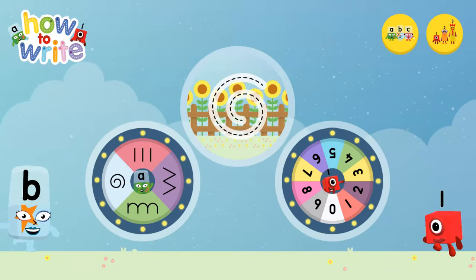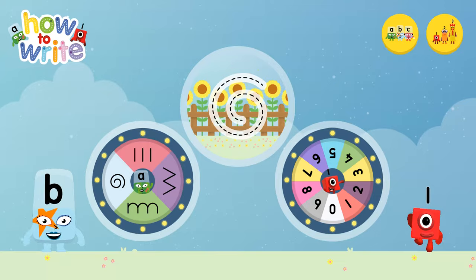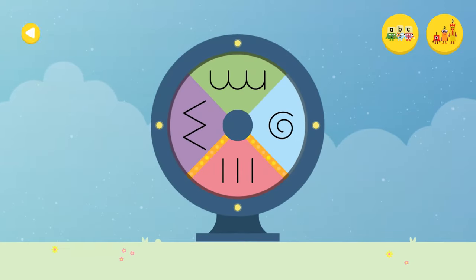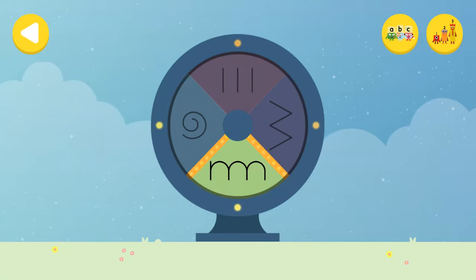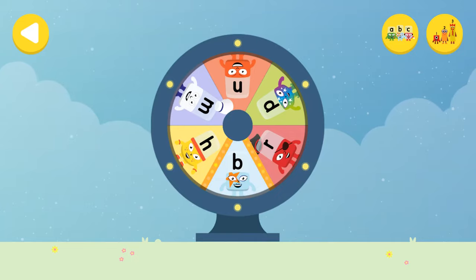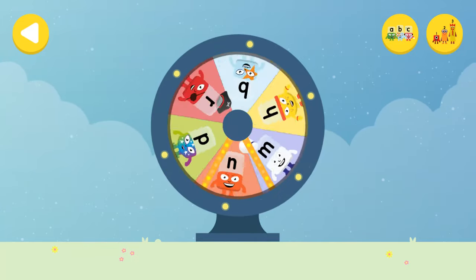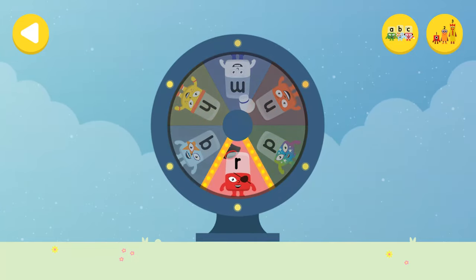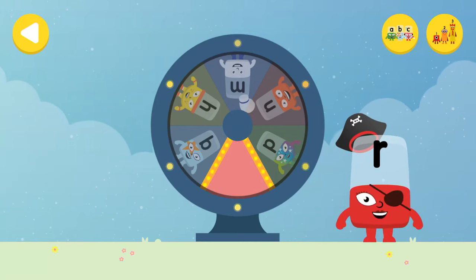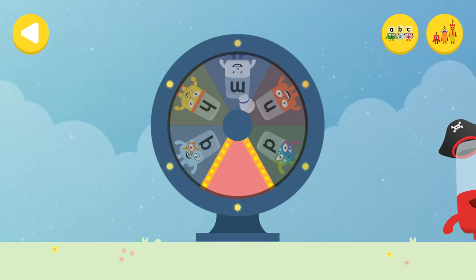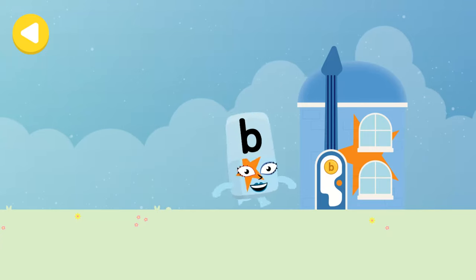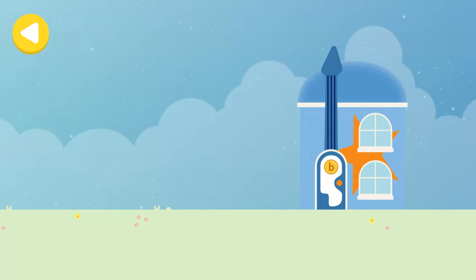Alpha Blocks and Number Blocks: How to Write! What would you like to do? Let's choose a letter family. Touch or drag the wheel to spin. Well done! You landed on the bouncy letter family. Spin the wheel again and find out which Alpha Block you're going to help. Great job! You've helped this Alpha Block go back home!